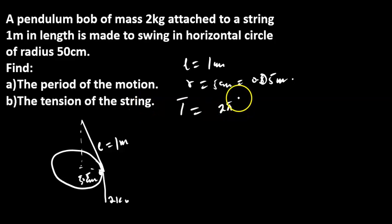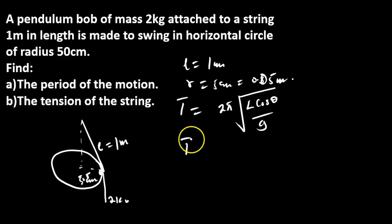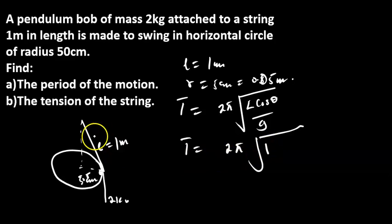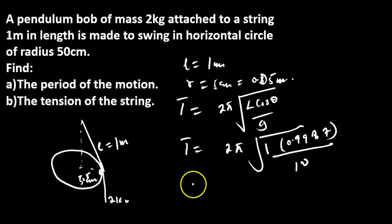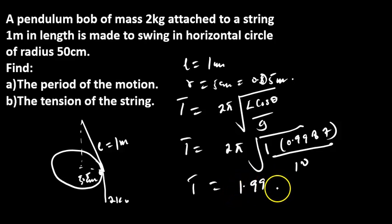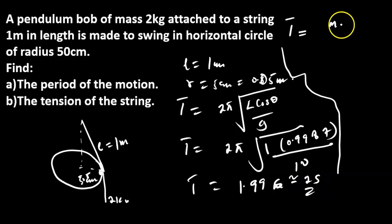We calculate the period using T = 2π√(l cosθ / g). With l = 1 m, cosθ = 0.9987 (deduced from the triangle), and g = 10 m/s², the calculation gives T ≈ 1.99 seconds, which is approximately 2 seconds.